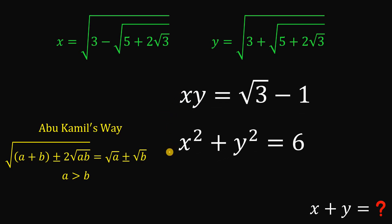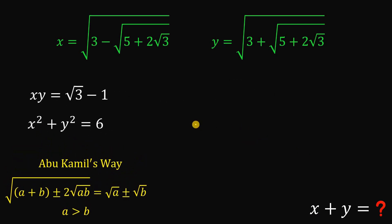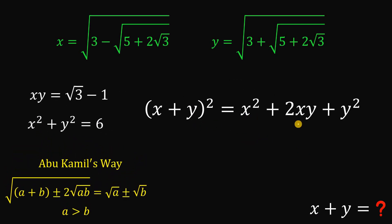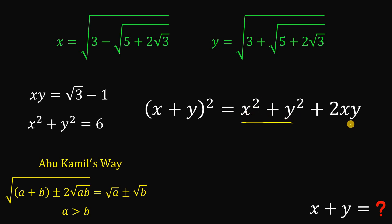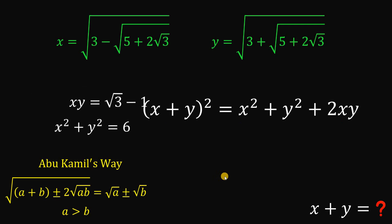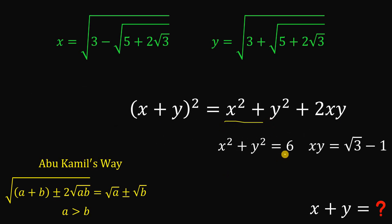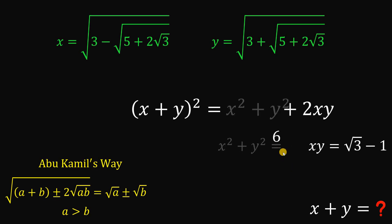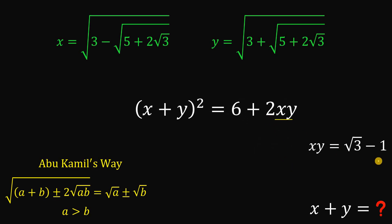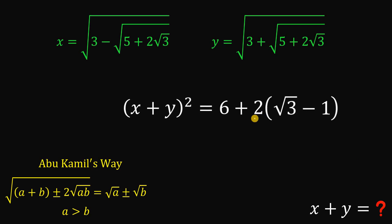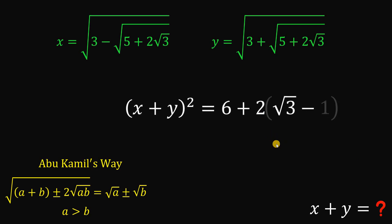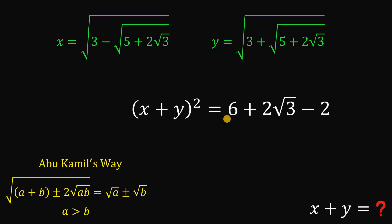Using these two results, we can now find the value of x plus y using the identity: if we square x plus y, we get x squared plus 2xy plus y squared. Rearranging, we now have the value of x squared plus y squared equals 6, and xy equals square root of 3 minus 1. Distributing gives 2 times square root of 3 minus 2. Combining like terms, 6 minus 2 is positive 4, giving us x plus y squared equals 4 plus 2 times square root of 3.